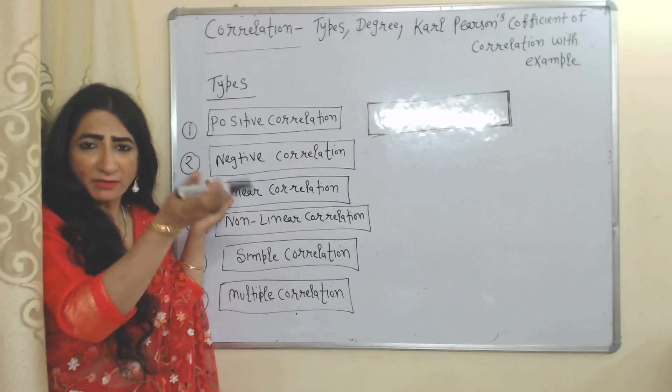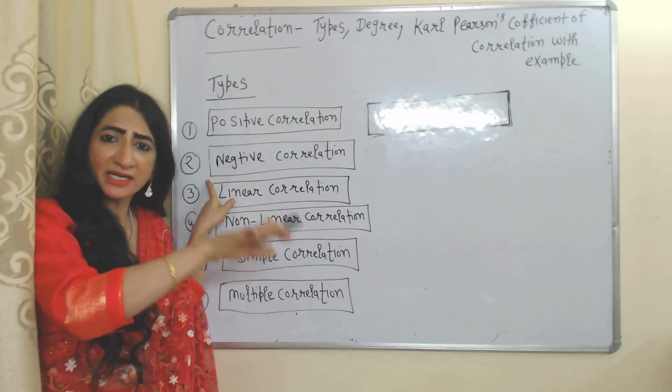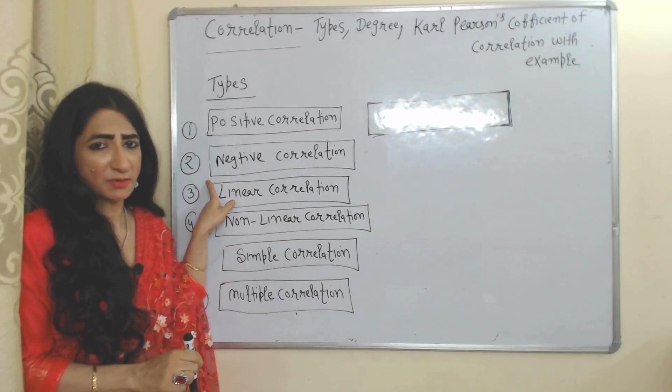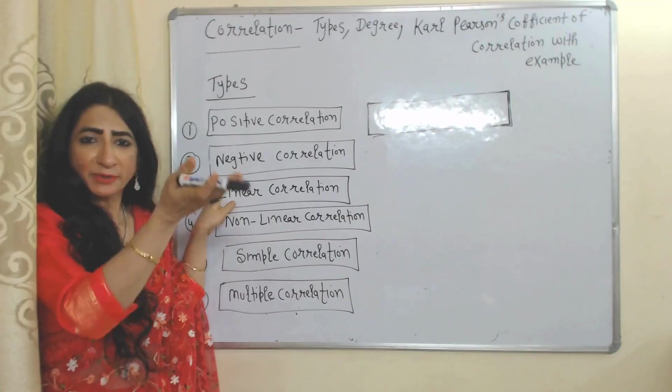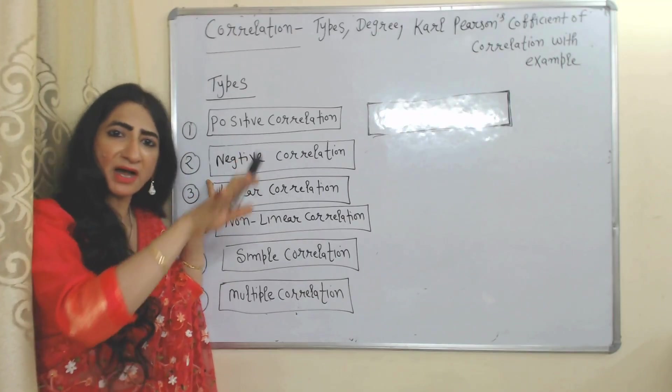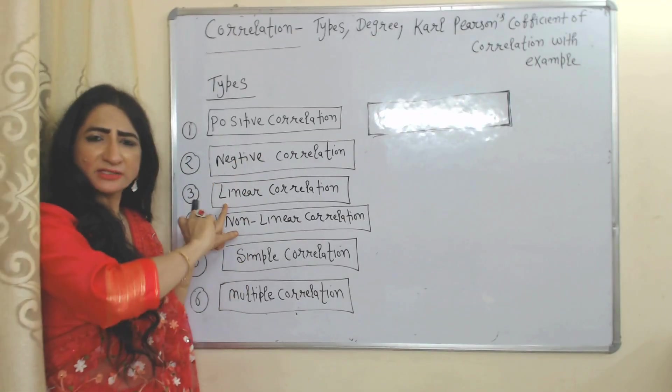Negative correlation shows an inverse relationship between two variables — that means if one variable increases then the other decreases. For example, the relationship between demand and price: as price increases, demand falls.